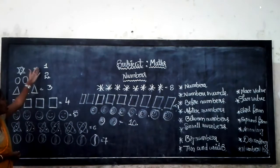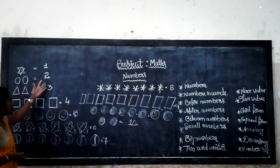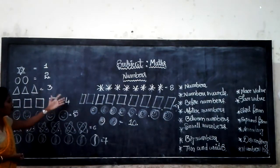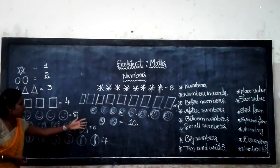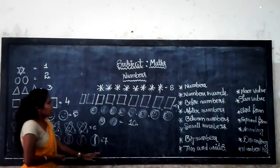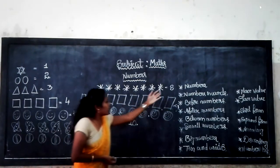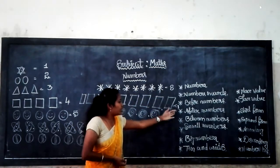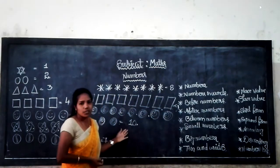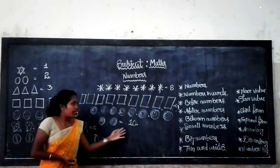Numbers: 1, 2, 3, 4, 5, 6, 7, 8, 9. The last one is 10.